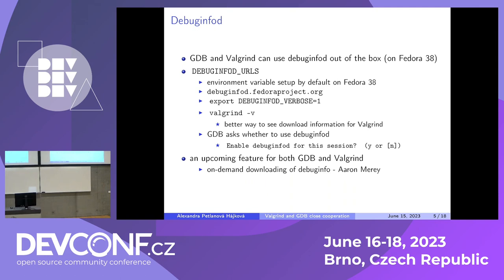DebugInfoD is an HTTP-based server which contains DebugInfo packages, and various debugging tools can fetch them automatically. On Fedora 38, it's enabled by default and Valgrind will automatically fetch any missing DebugInfo packages. GDB will ask you whether you want to do that. In some cases, when you have a lot of DebugInfo packages missing, this might take a lot of time, so it might be inconvenient. Aaron is working on on-demand downloading.